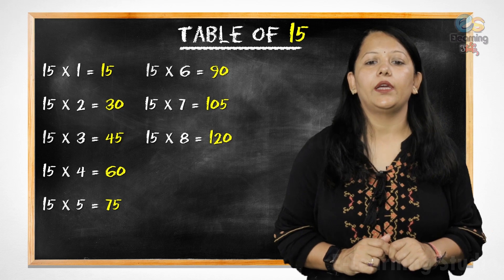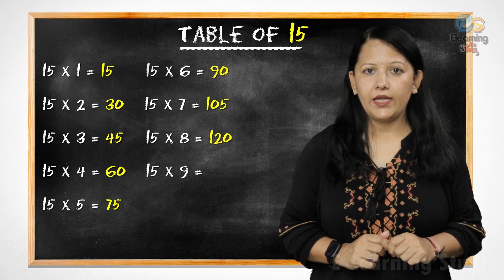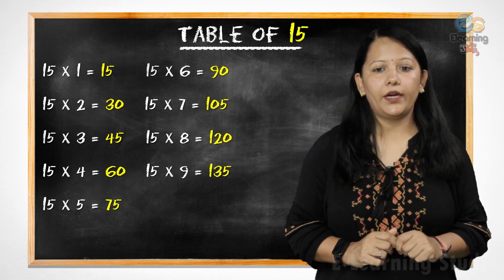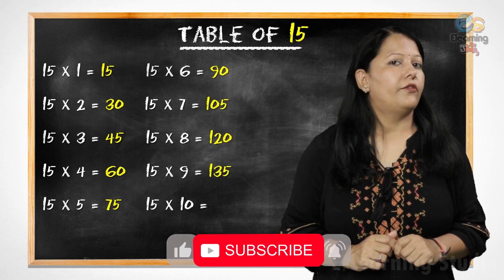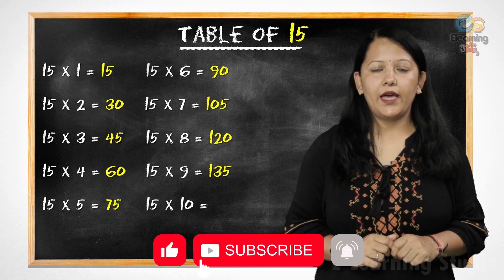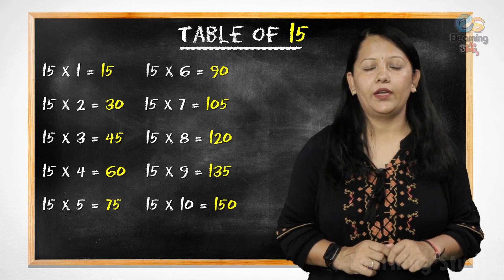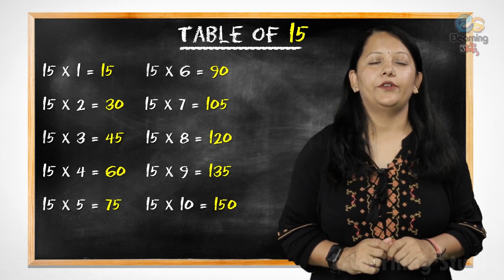Fifteen nines are one hundred thirty-five. Fifteen tens are one hundred fifty. Very good.